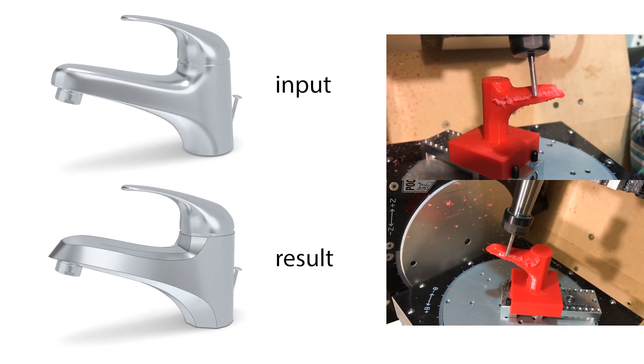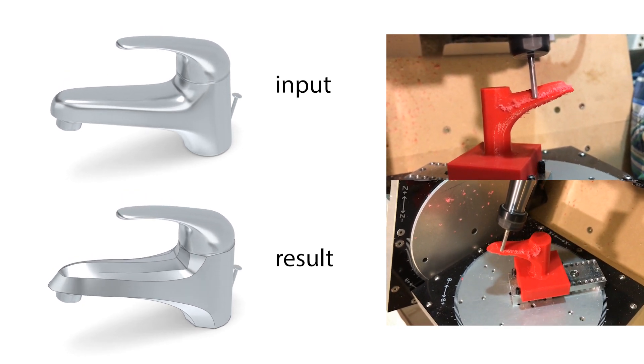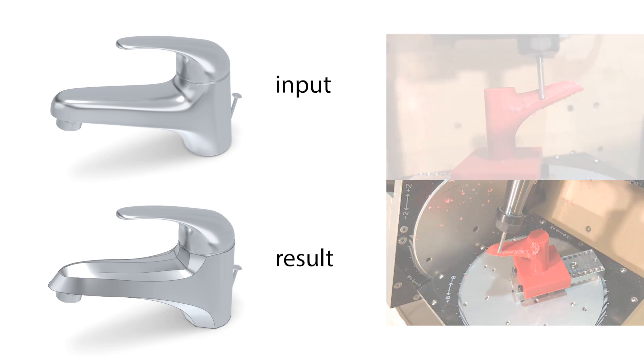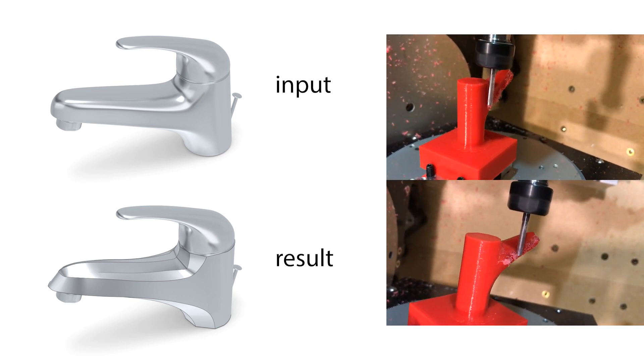Even complicated surfaces flow towards a natural patch layout by themselves just by minimizing our energy. This faucet was approximated by a piecewise developable surface using our method and then milled from plastic resin using a CNC mill.